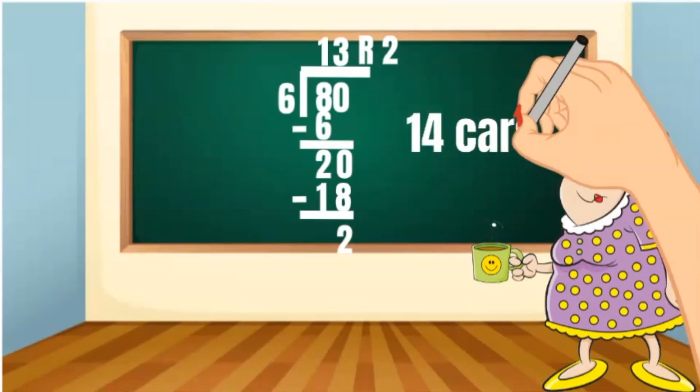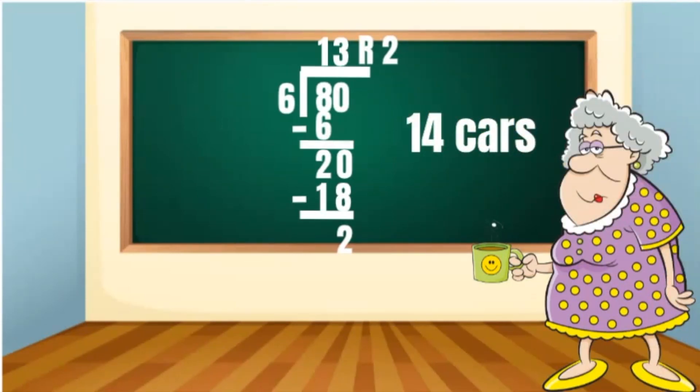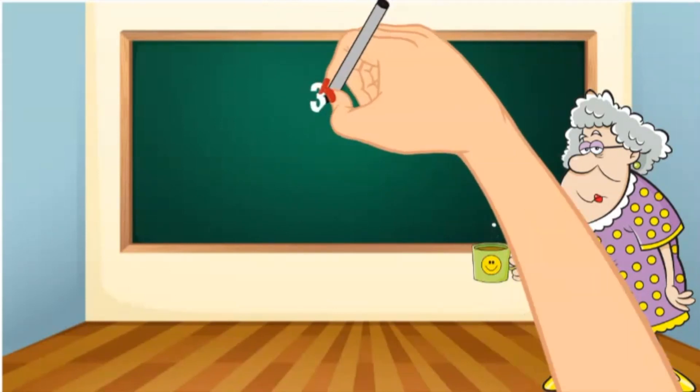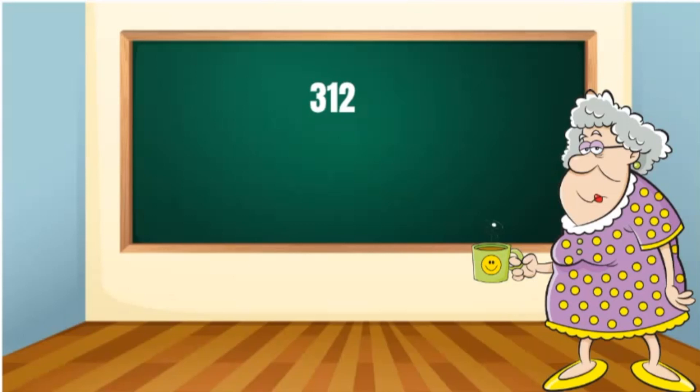Now kids always want to eat on field trips. I have 312 snacks to make snack bags for each class. Each snack bag will contain nine snacks. I already figured out that 312 divided by nine equals 34 with a remainder of six.